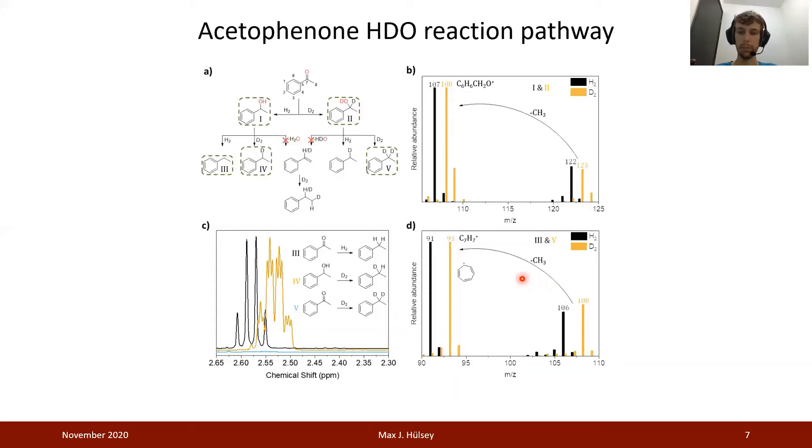The same was observed from GC-MS analysis, where we see the incorporation of two deuterium atoms, which do not sit at the terminal methyl group but sit at the methylene group. This confirms that the pathway completely follows a hydrogenation to the intermediate alcohol and direct hydrogenolysis pathway, and not the dehydration-hydrogenation pathway.